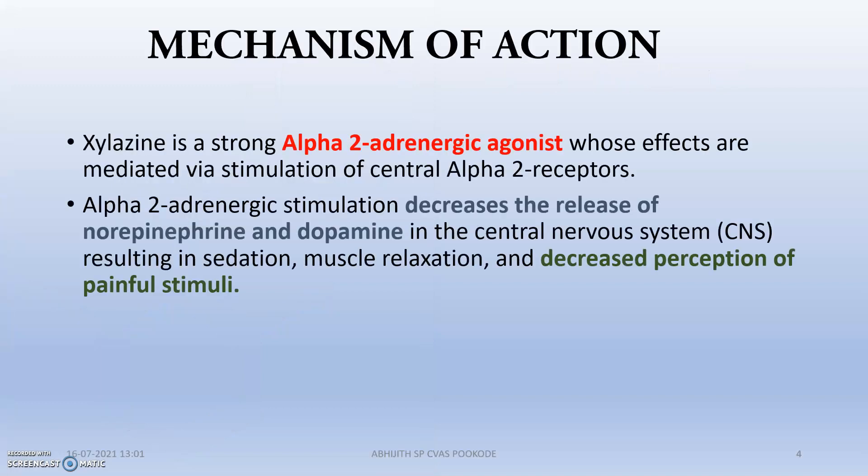Mechanism of action: Xylacine is a strong alpha-2 adrenergic agonist drug whose effects are mediated via the stimulation of central alpha-2 receptors. It is an adrenergic or sympathetic system drug. Alpha-2 adrenergic stimulation decreases the release of norepinephrine and dopamine in the central nervous system, resulting in sedation, muscle relaxation, and decreased perception of painful stimuli.